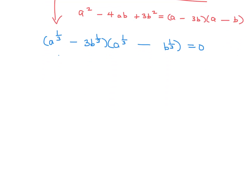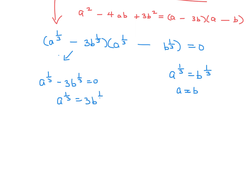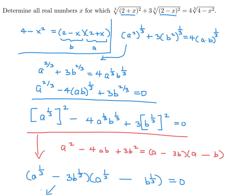This basically means that either a^(1/3) equals b^(1/3) — which means a equals b — or a^(1/3) minus 3b^(1/3) equals 0, giving a^(1/3) = 3b^(1/3). Taking everything to the third power, that would be a = 27b. So these are the two solutions. But I still need to get the value for x.